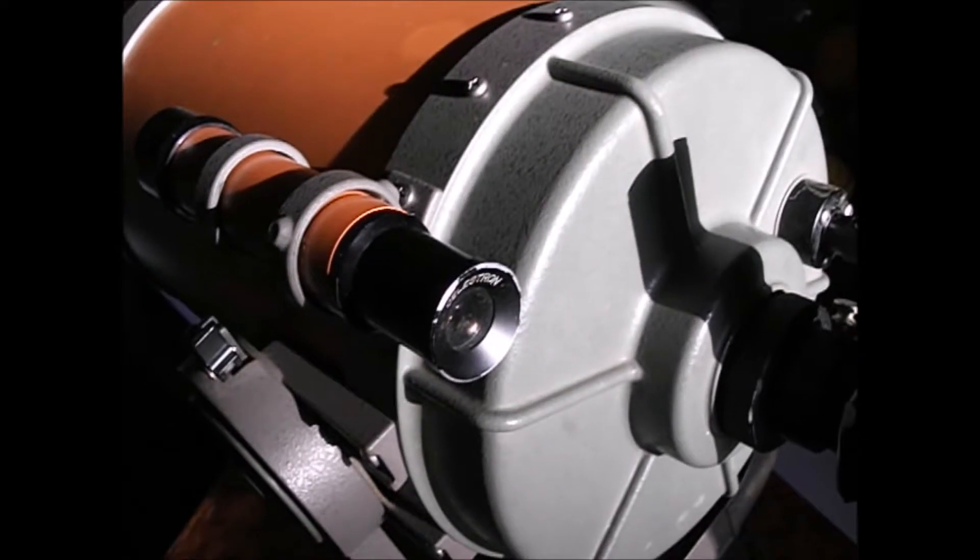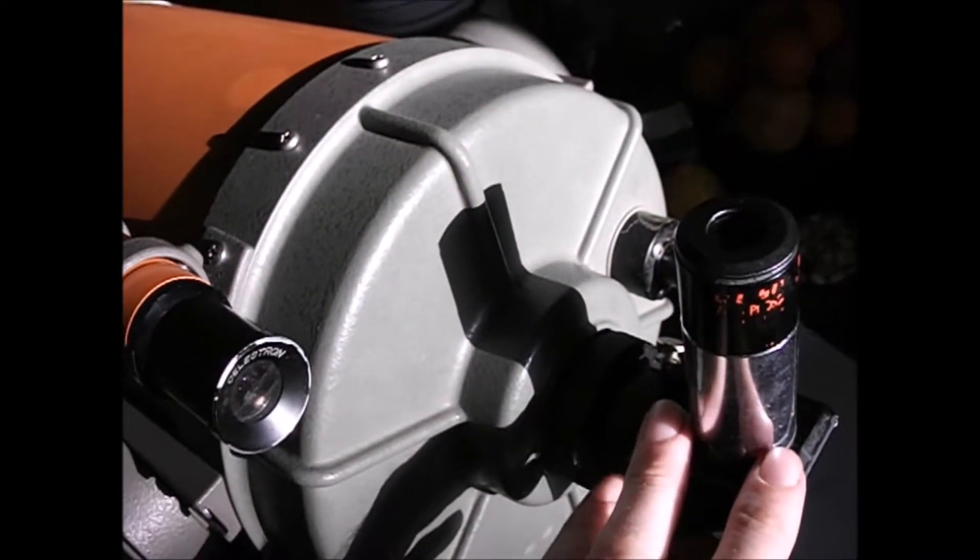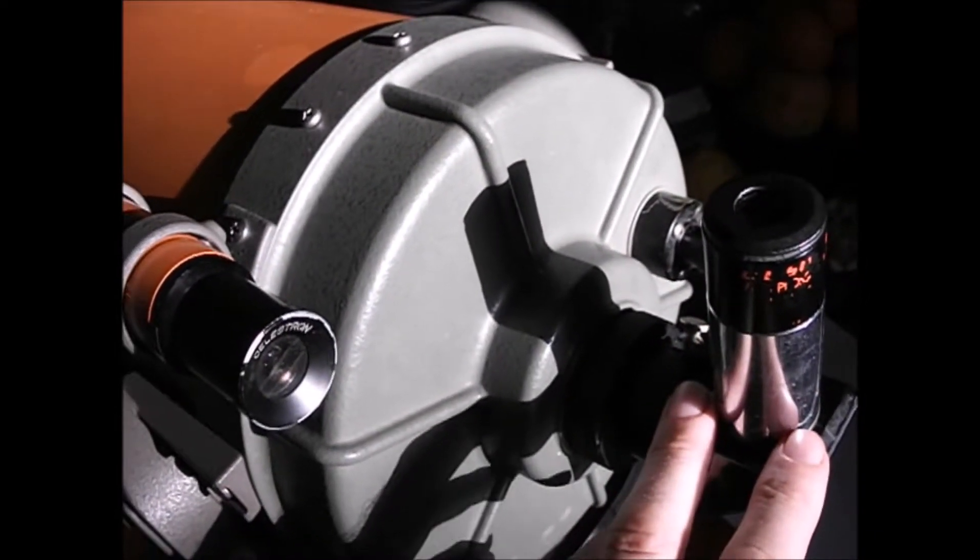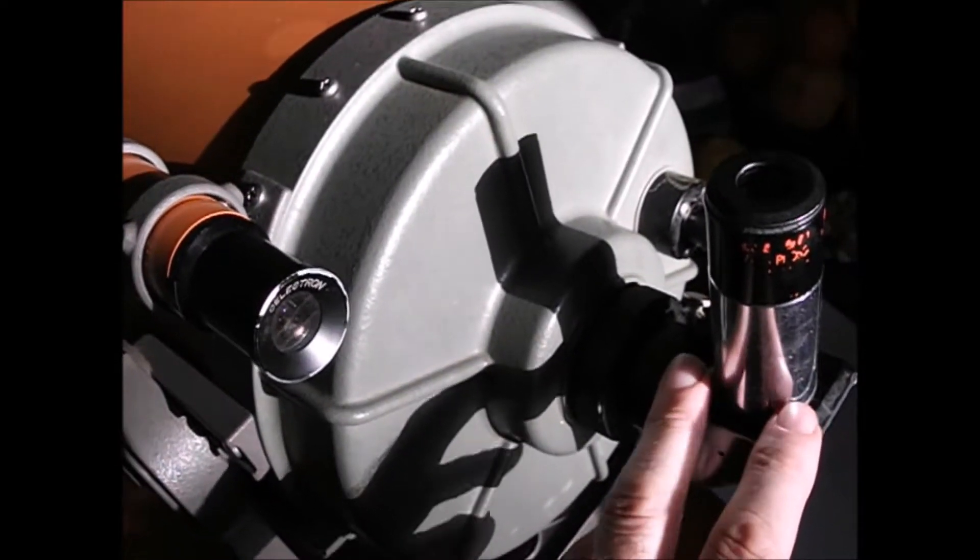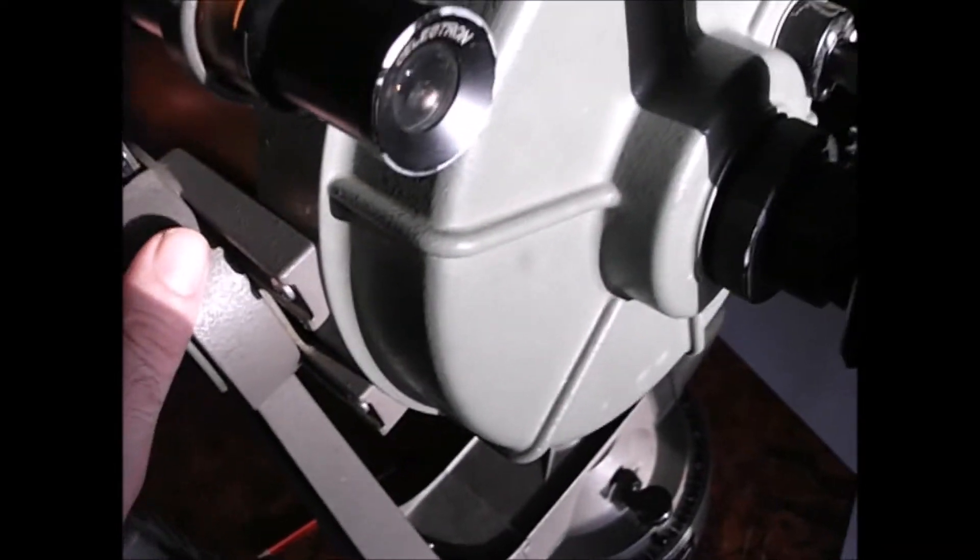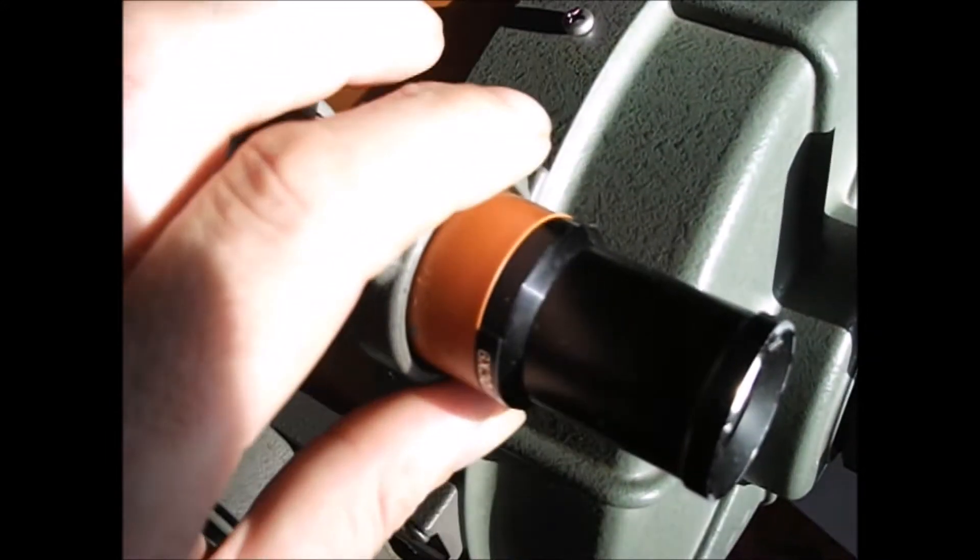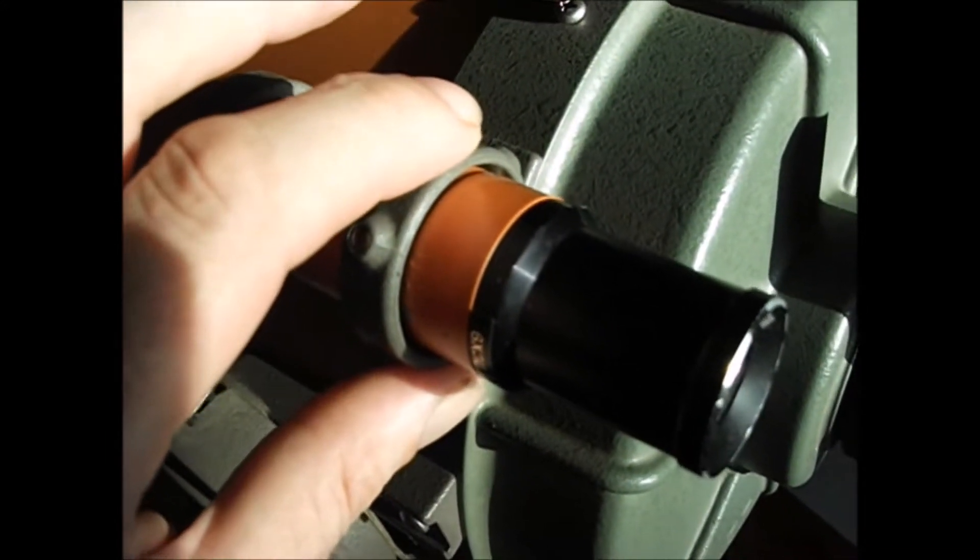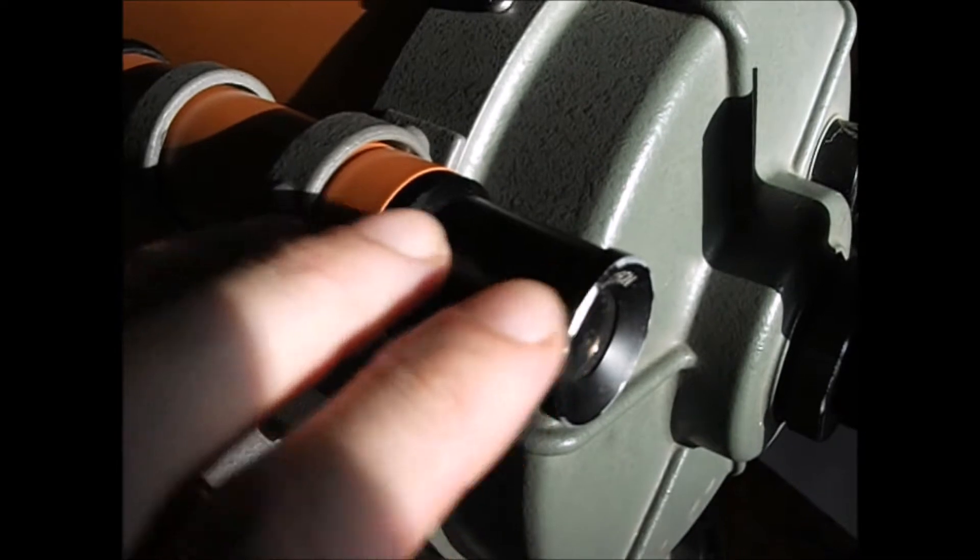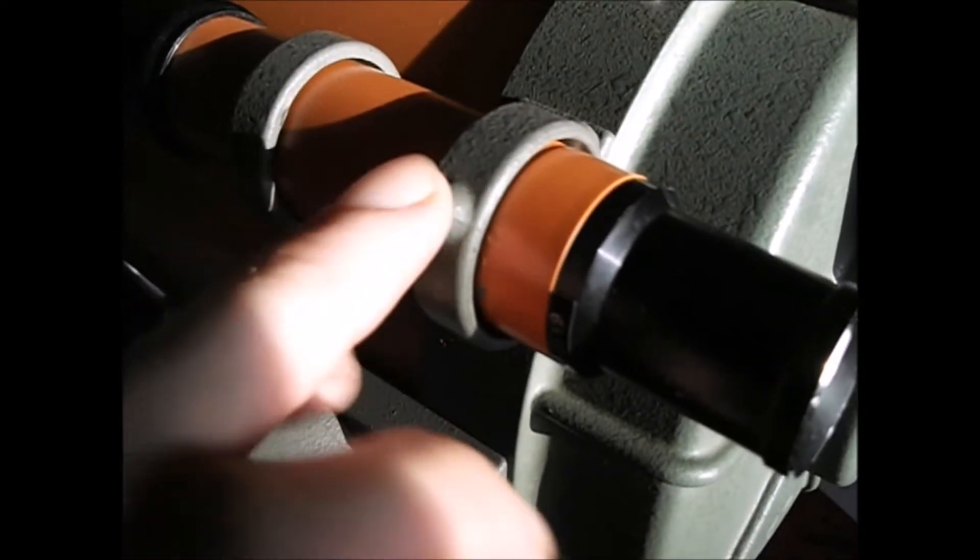The adjustment procedure is once you have the eyepiece of the telescope centered on the reference object—in our case it's the antenna on the center skyscraper—lock the telescope in position using the drive clutch so that it can't move, and use the right ascension lock as well. And then using those three mounting screws, simply shift the position of the finder scope so that the crosshairs in the finder scope line up exactly with the reference point. In this case, the antenna on the skyscraper.